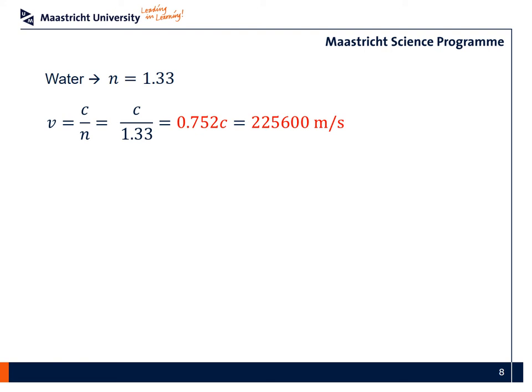So this is the minimum velocity that an electron, or any particle, actually, must have in order to produce Cherenkov radiation. From this, we can deduce that beta, that is v over c, is 0.752. We can then analyze the minimum kinetic energy that an electron must have, in order indeed to produce Cherenkov radiation.